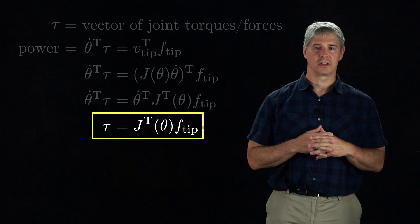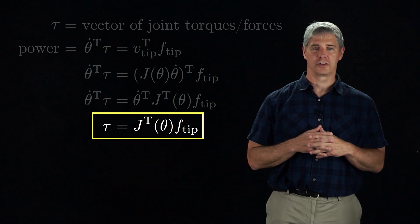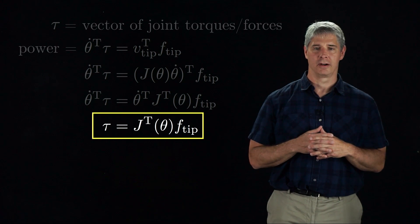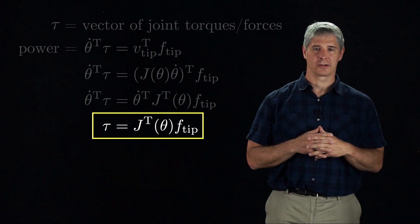For our force analyses, we assume that the robot is at equilibrium and that all joint torques and forces create forces at the end effector. No joint effort is needed to cancel gravity, for example.